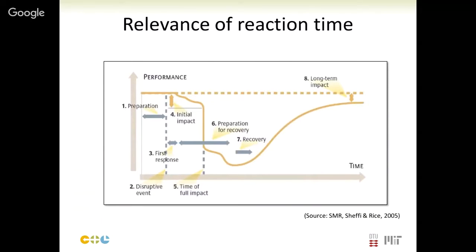If we look at the disruption curve that Professor Sheffi and Professor Rice developed to characterize how a company reacts to a disruption: the horizontal axis is time and we have some measure of performance behaving around a certain value — until a disruptive event such as a cyber attack occurs, causing performance to drop until we reach the full impact of the disruption. At the time of full impact, a recovery process begins, aiming to return performance to expected levels or, if there is organizational learning, even improve beyond them.